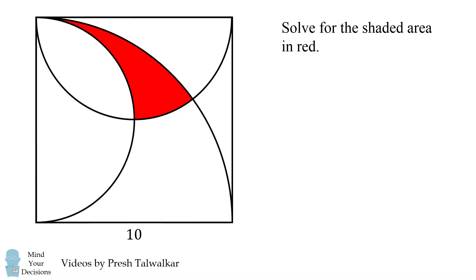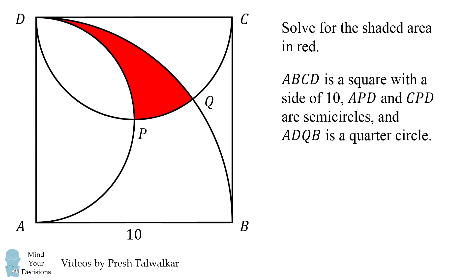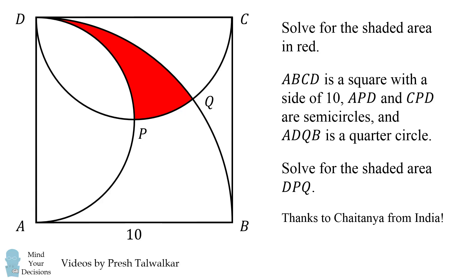Let me label some of the intersection points. ABCD is a square with a side of 10. APD and CPD are semicircles, and ADQB is a quarter circle. The problem is to solve for the shaded area DPQ. I thank everyone who sent me this problem — it was a very popular suggestion, and in particular I thank Chaitanya from India who was the first person to send me this problem. Can you figure it out? Give this problem a try and when you're ready keep watching the video for a solution.